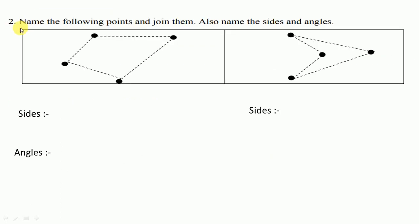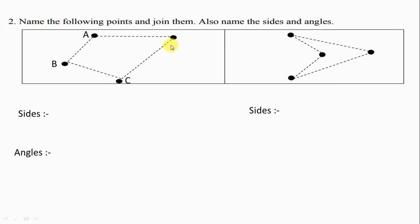Question No. 2: name the following points and join them. Also, name the sides and angles. The point is already joined, so we name as A, B, C, D. We have to write sides and angles.